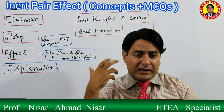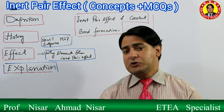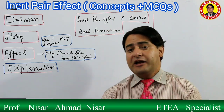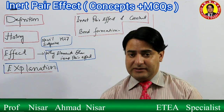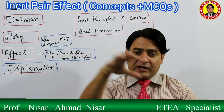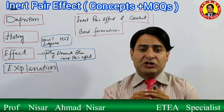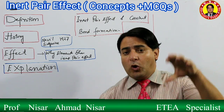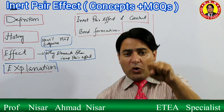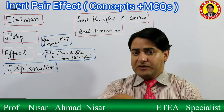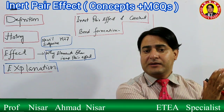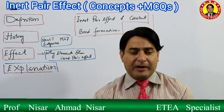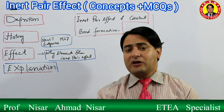The Inert Pair Effect occurs due to the ineffective shielding of the outermost s-electrons by the intervening d and f electrons in the atom. The inner d and f electrons cannot effectively shield the outer s-electrons from the hold of the nucleus. Because of this, the nucleus's hold on these s-electrons increases, and they become tightly held. As a result, these s-electrons cannot be promoted to the p sub-shell - they cannot get excited.